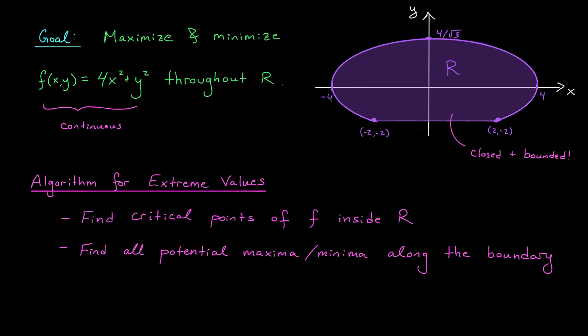All righty, so we've got lots to do. Let's start by locating any critical points inside the region R. The critical points come from our partial derivatives, and the partial derivatives of f are given by fx equals 8x, and fy equals 2y. These are nice polynomial functions, and so they exist everywhere. Therefore, the only way that we can obtain a critical point is if both partial derivatives are 0, and it's not too hard to see that this will only occur at the origin. Since the origin, (x,y) equals (0,0), is indeed inside the region R, this is a point that we have to consider.